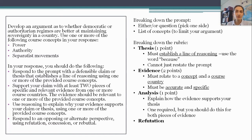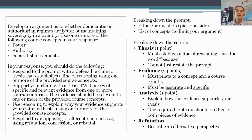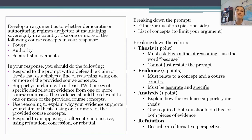Finally, at the end of your essay you have to do something called refutation or response, and that requires two things. Number one: you have to describe an alternative perspective. You have to explain why a reasonable person might disagree with the argument you've laid out. You might want to introduce that with something like 'some might say' or 'it could be argued' — set up a hypothetical person to argue with — and then say why a reasonable person who knows what they're talking about might disagree with your argument.